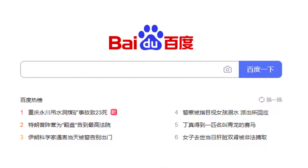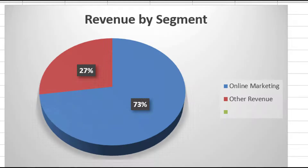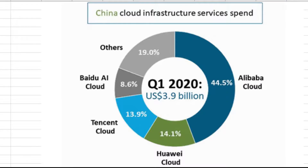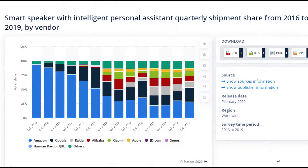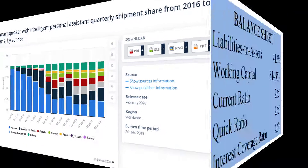If you don't know about Baidu, they're basically the Google of China. This is their homepage. Baidu's main source of revenue is through online marketing, but they do have about 27% of their revenue coming from other sources. For example, Baidu is getting into the cloud in China and also getting into the personal assistant business. You can see their market share — notice it's in gray for Baidu. Although they're not a dominant player in the industry right now, their market share has been increasing.